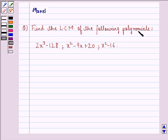The question says, find the LCM of the following polynomials: 2x cubed minus 128, x squared minus 9x plus 20, and x squared minus 16. So these are the three polynomials given to us and we have to find their LCM.